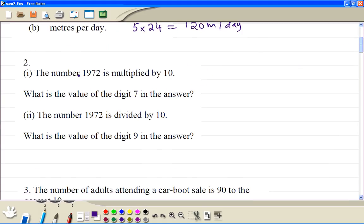Number 2. So we multiply this number by 10, we get 19720. Now the value of 7 now is 700. Here we can divide this number by 10, so the number is 197.2. The value of 9 now is just 90.